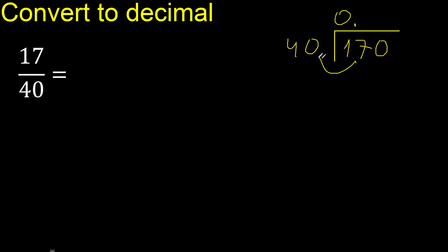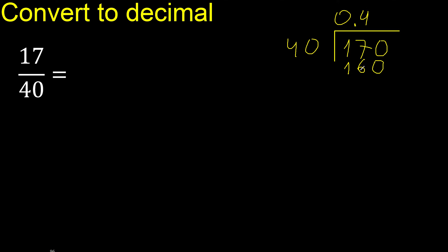170 is not less, therefore 40 — multiply by which number is nearest to 170 but not greater? Multiplied by 5 is greater, multiplied by 4 is 160, which is not greater. Subtract: the remainder is 10.